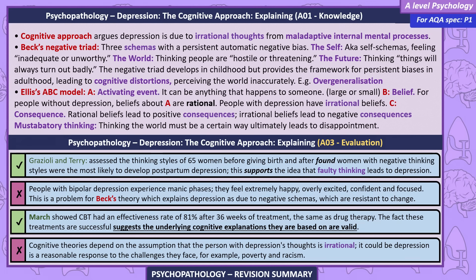Evaluations. Grisoli and Terry assessed the thinking styles of 65 women before and after giving birth, finding women with negative thinking styles were most likely to develop postpartum depression — supporting the idea that faulty thinking leads to depression. However, people with bipolar depression experience manic phases where they feel extremely happy, overexcited, confident, and focused, which is a problem for Beck's theory. March showed CBT had an effectiveness rate of 81% after 36 weeks, the same as drug therapy, suggesting the cognitive explanations underlying it are valid. Cognitive theories also depend on the assumption that depressive thoughts are irrational — it could be that depression is a reasonable response to real challenges such as poverty and racism.